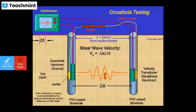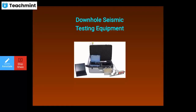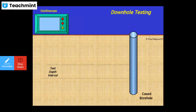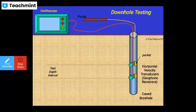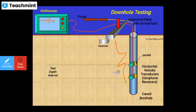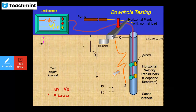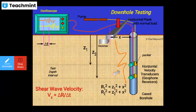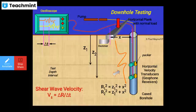Downhole seismic testing uses a test depth interval with a pump, a horizontal plank with normal load, a hammer, and the borehole. Packers, horizontal velocity transducers, and geophone receivers are present at depths Z1 and Z2. Shear wave velocity Vs = ΔR/ΔT, where R1² = Z1² + x² and R2² = Z2² + x².